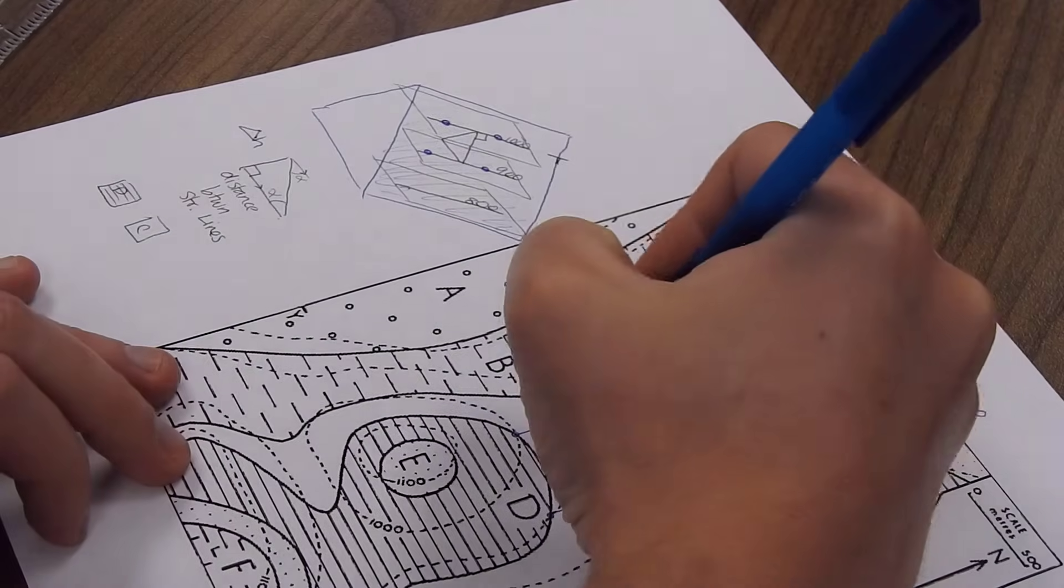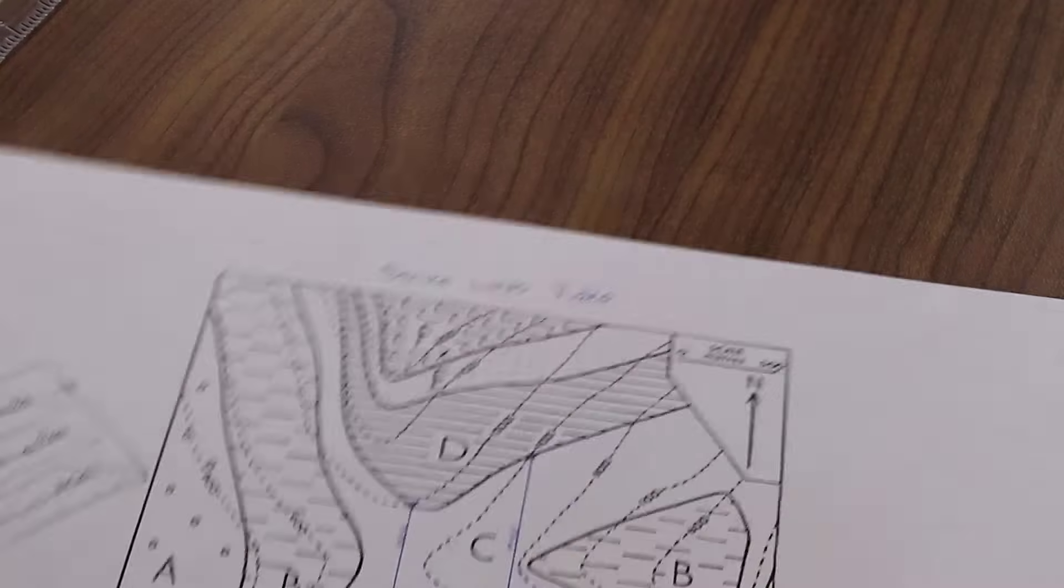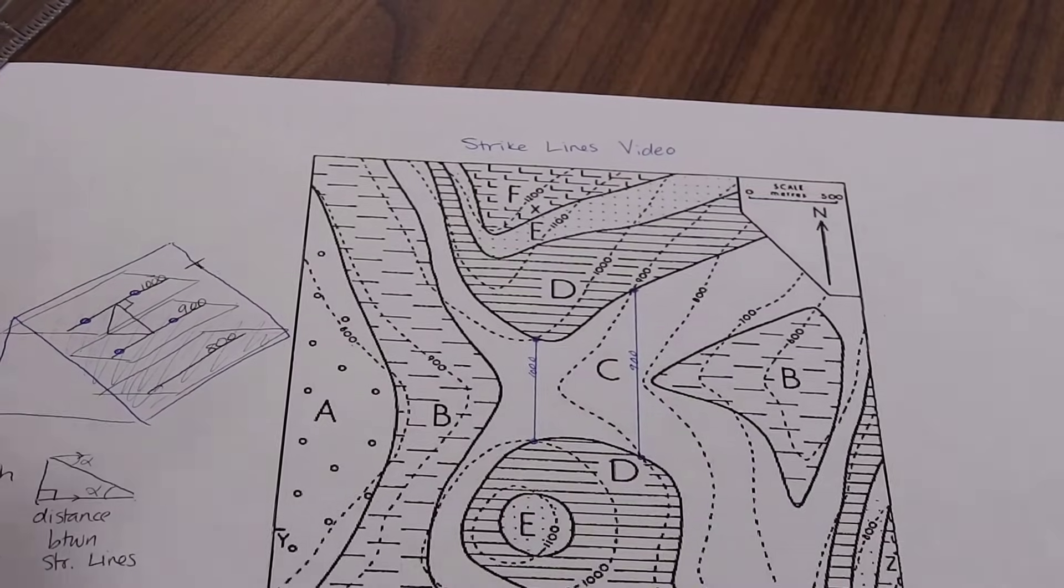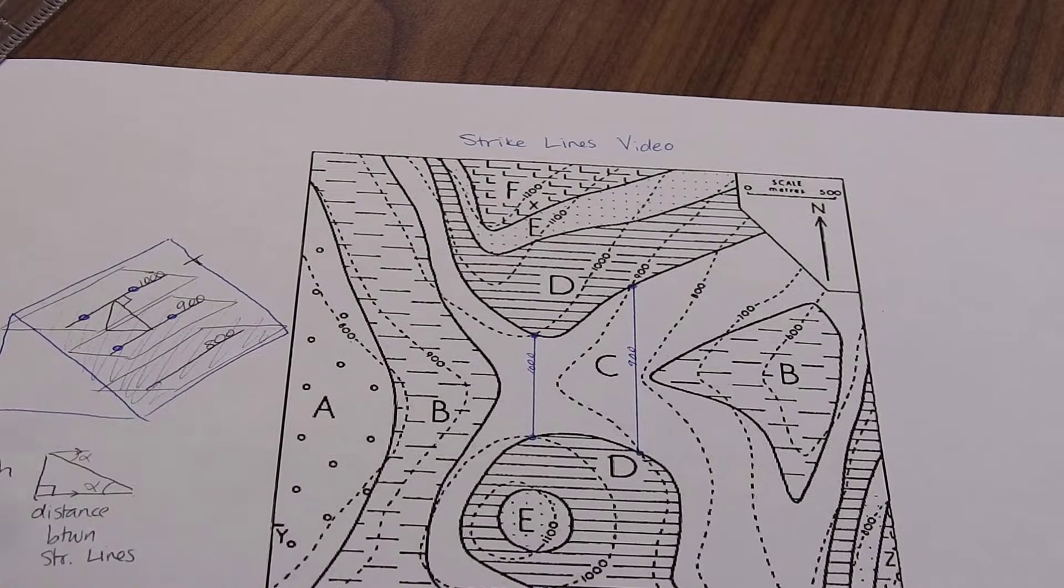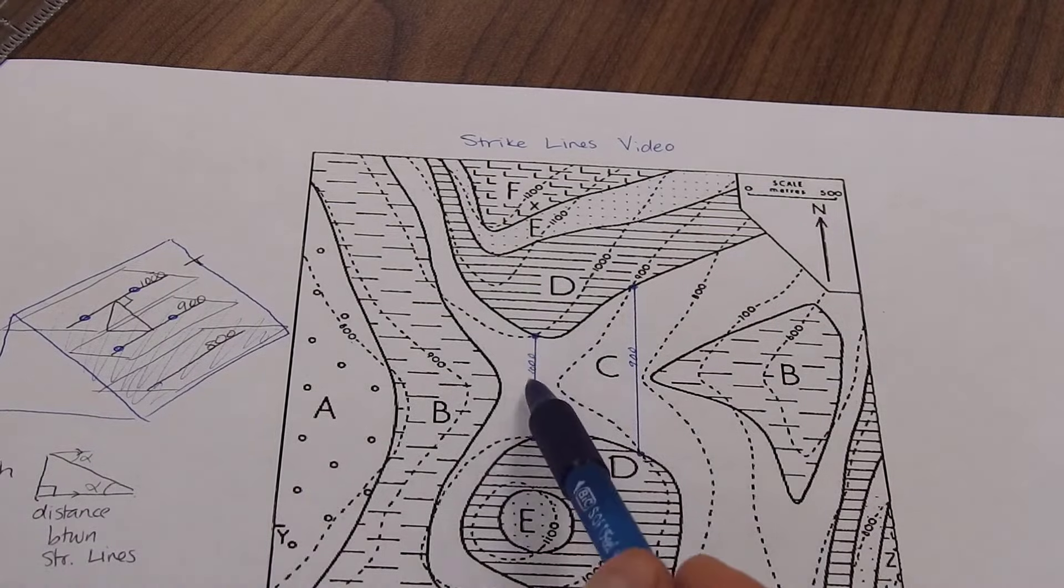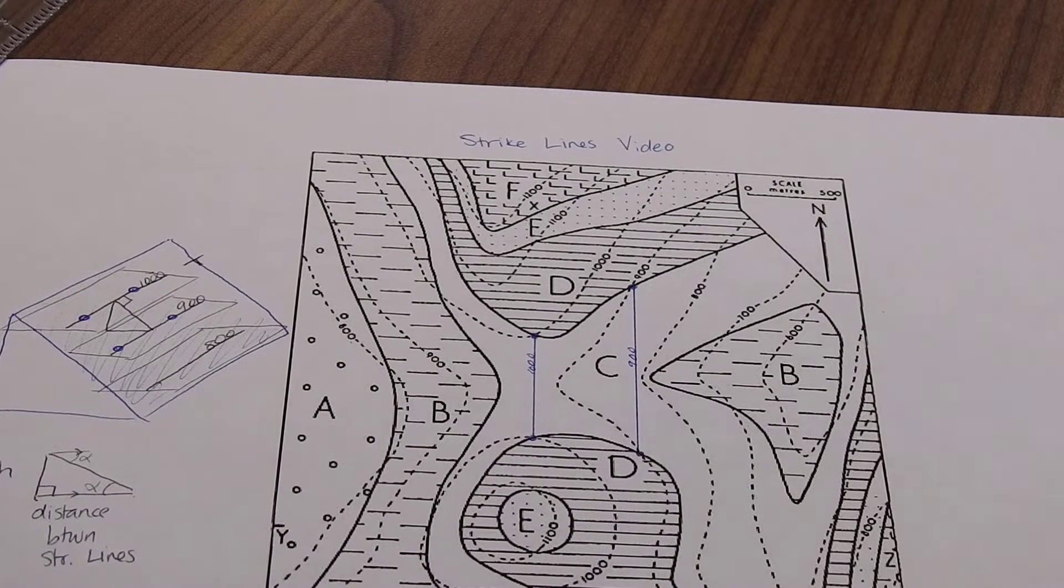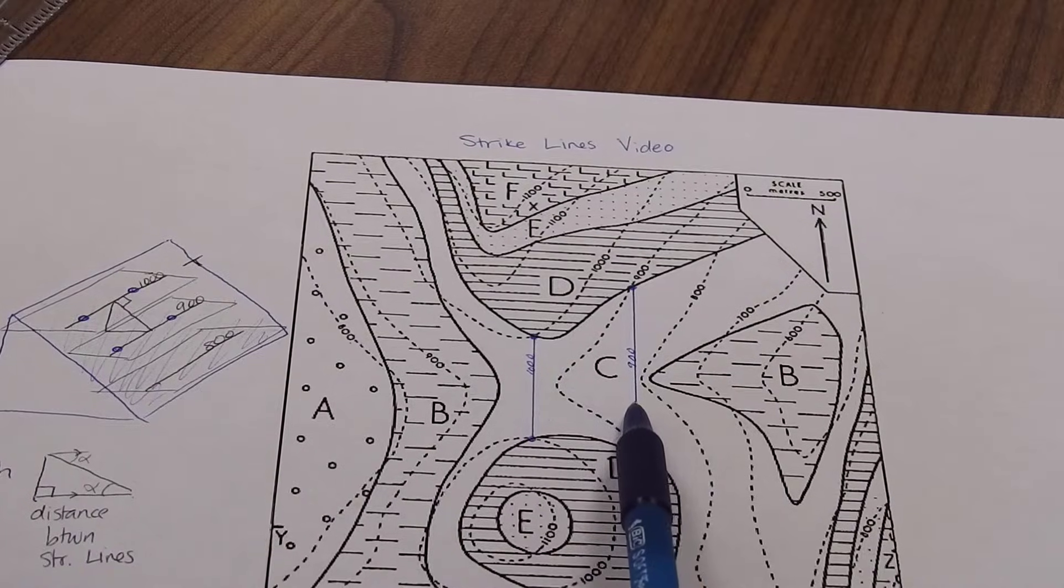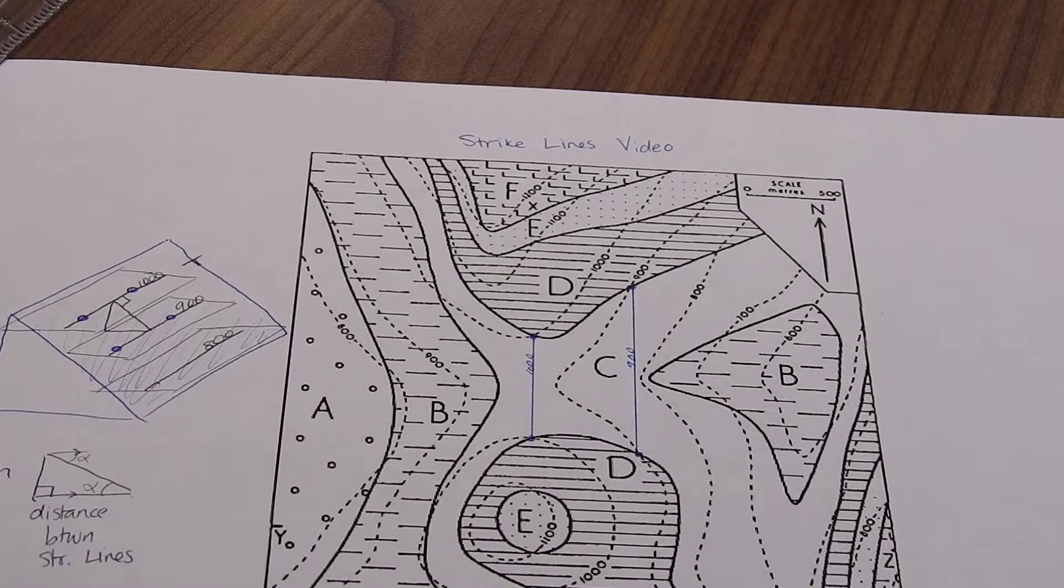Okay, this is the 1,000. And that one is the 900. So what you might be thinking to yourself, what I guess I would be, is this line is not on that contact. Like if I go right here in the field, I'm going to be in unit C, not in unit D. So how can I really say that that's the strike of unit D, or the contact between C and D?